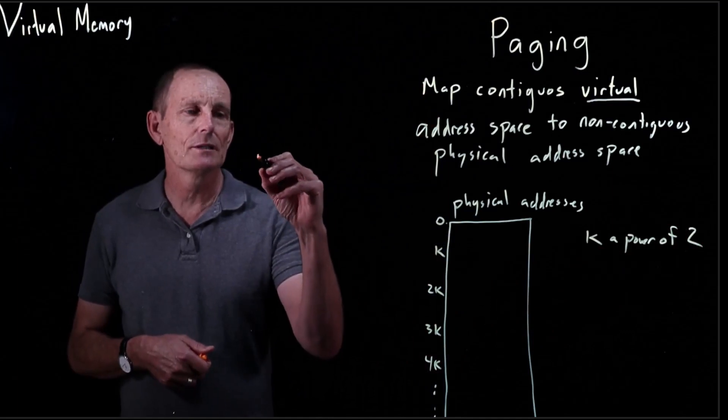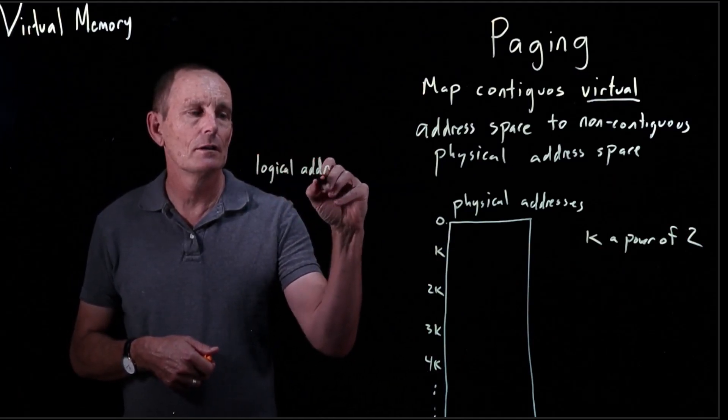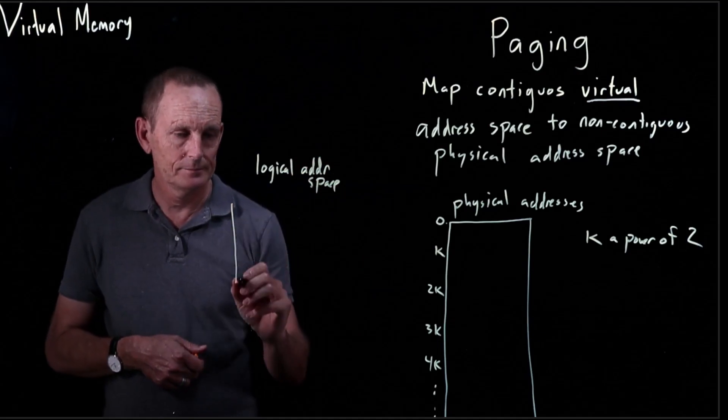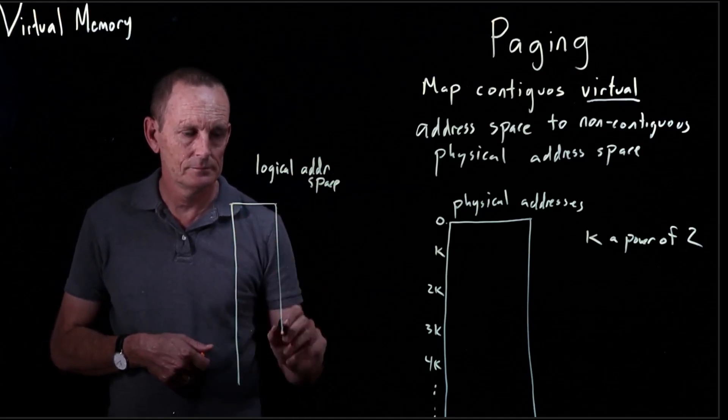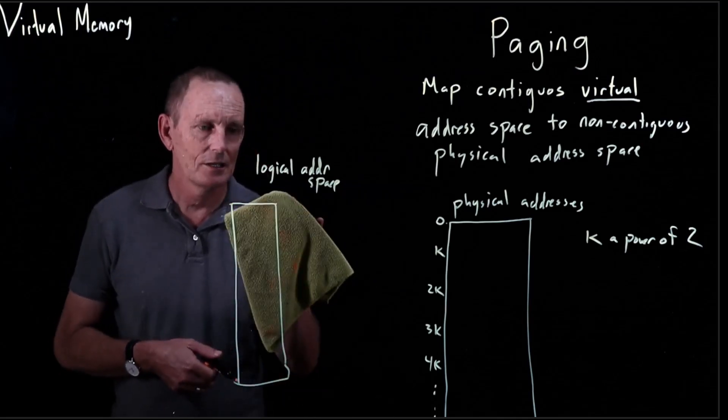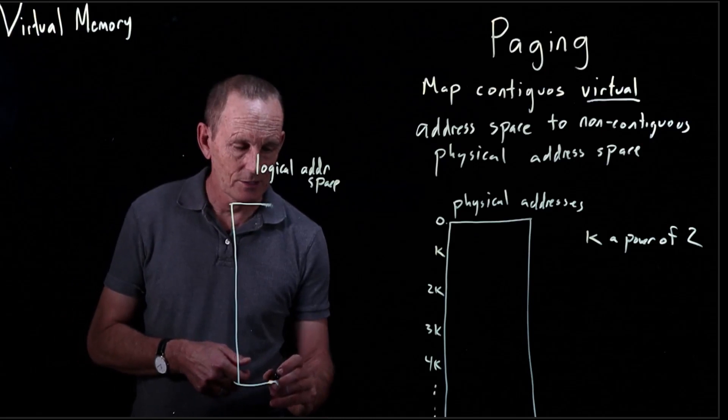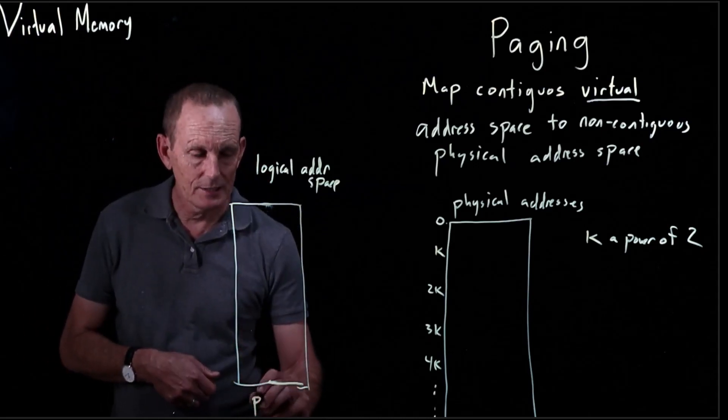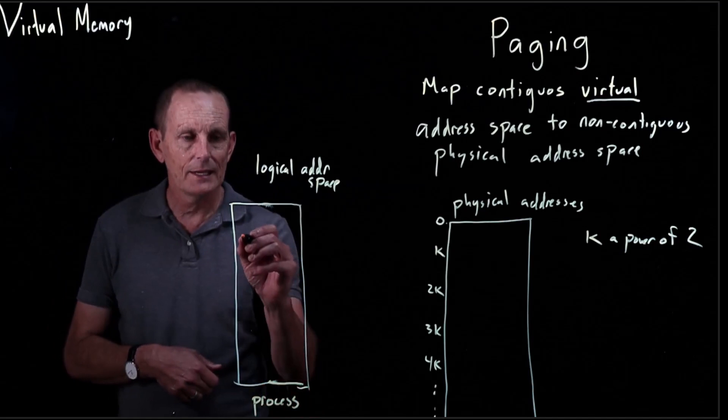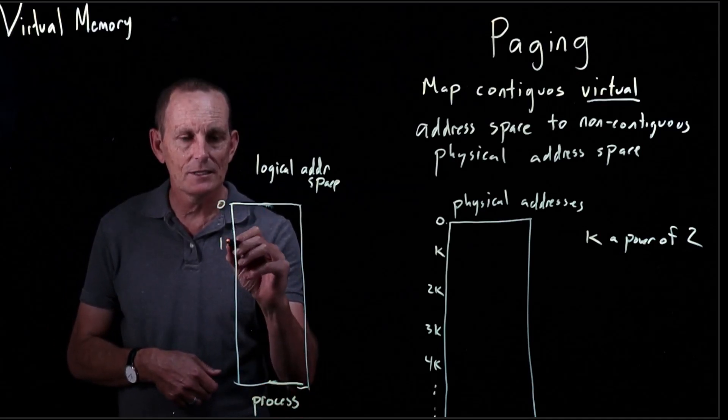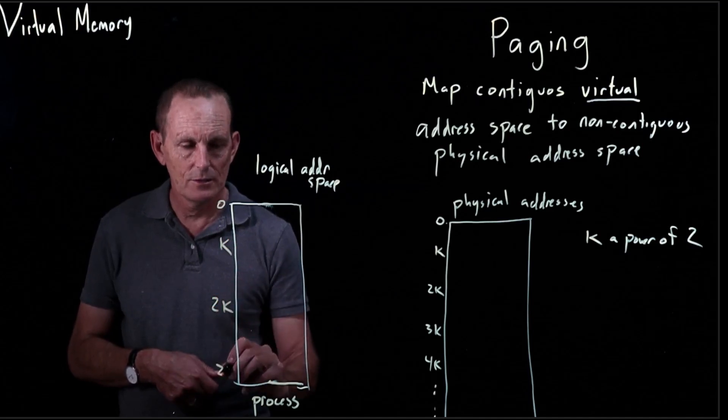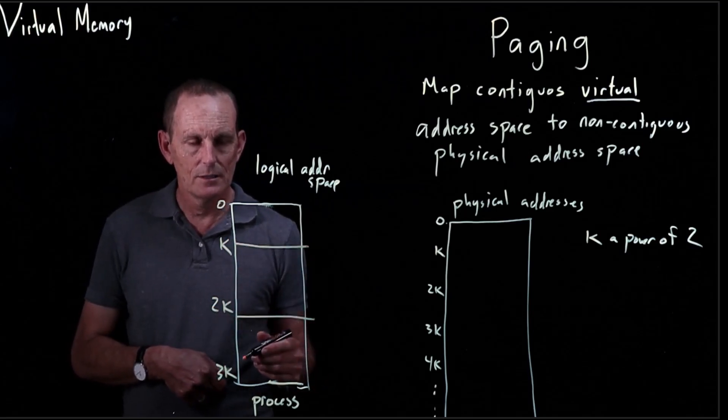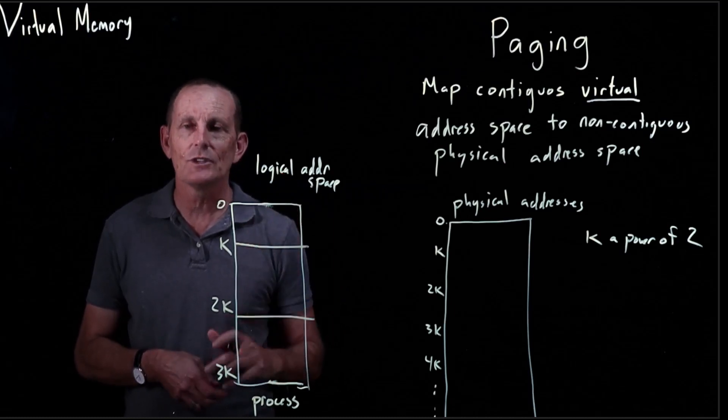And then our logical address space is going to be something like this. Let's make it the same width so it looks about the same size. So here we have our process. Let's say we have a small process and its address space is from 0 to 3k. These are all supposed to be equal sized, each of size k.